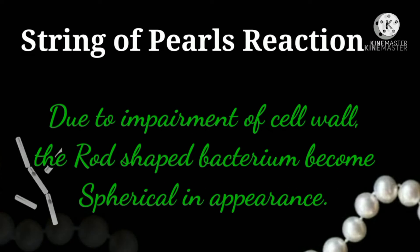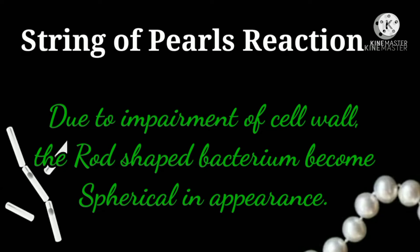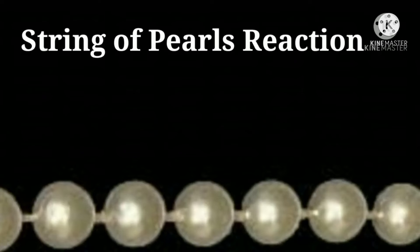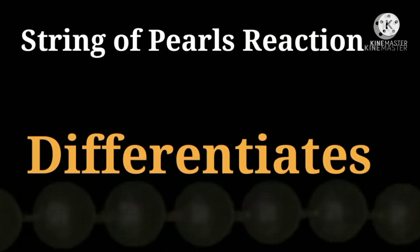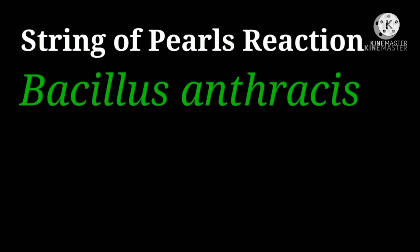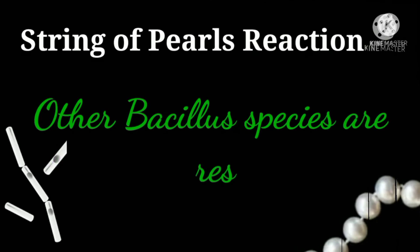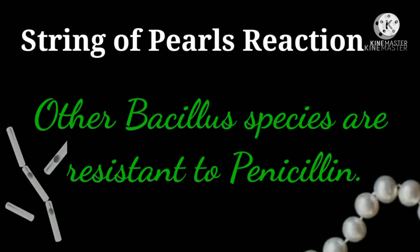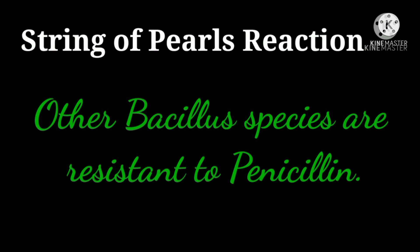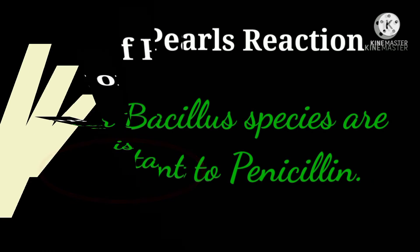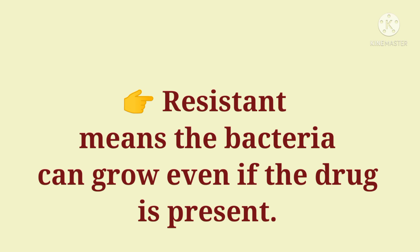One important point to note: due to impairment of the cell wall, the rod-shaped bacterium becomes spherical in appearance. This string of pearls reaction clearly differentiates Bacillus anthracis from Bacillus cereus and other aerobic spore bearers, because other Bacillus species are resistant to penicillin and do not exhibit the string of pearls reaction. Resistant means the bacteria can grow even if the drug is present.